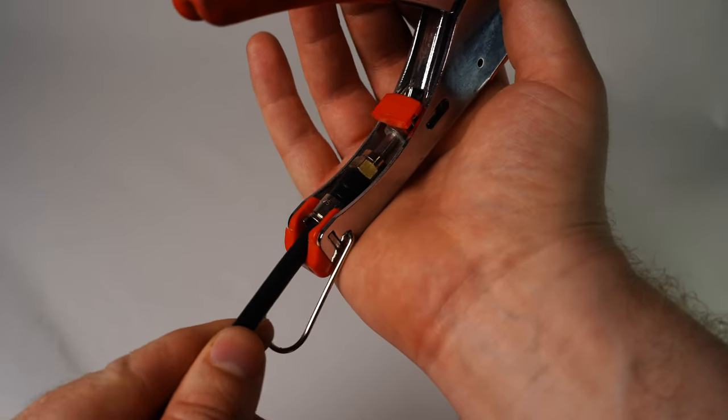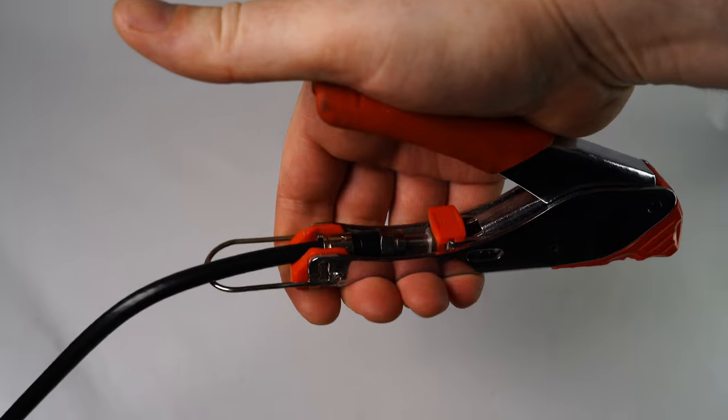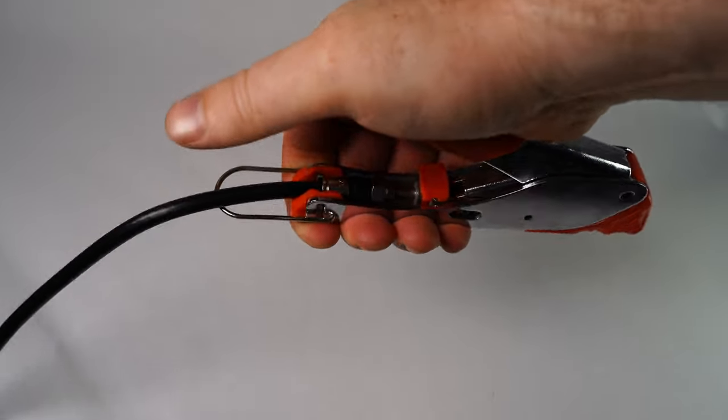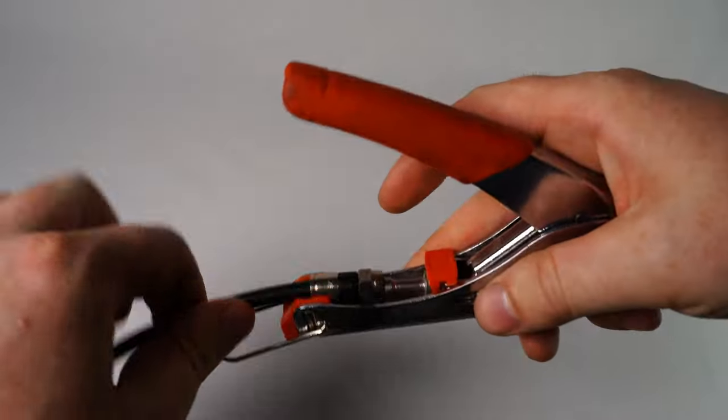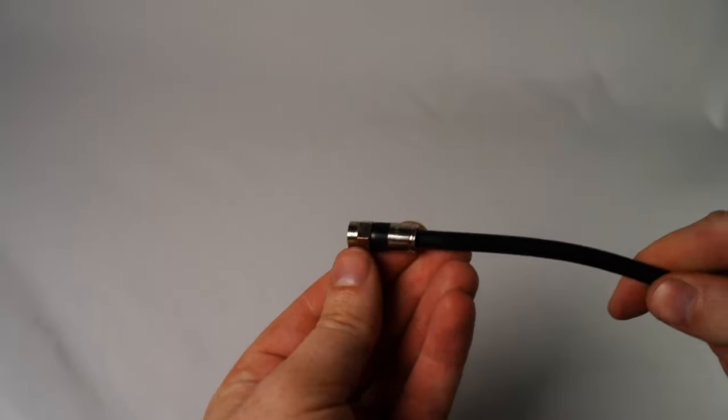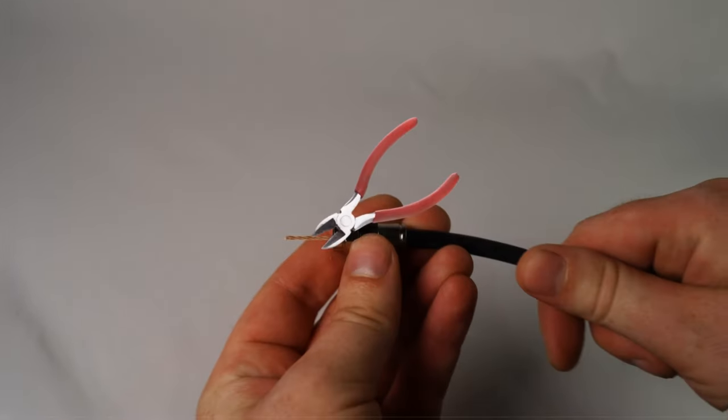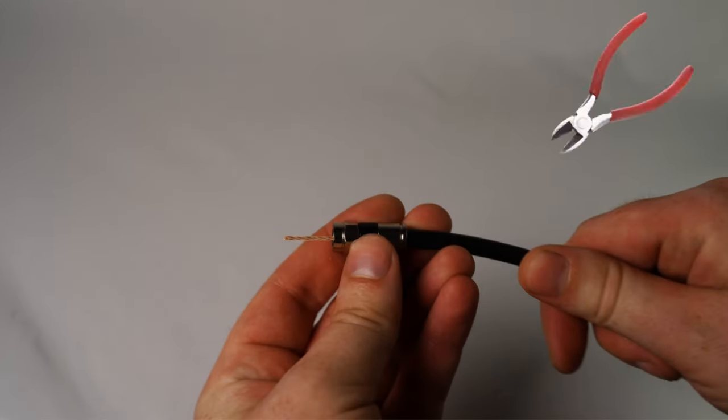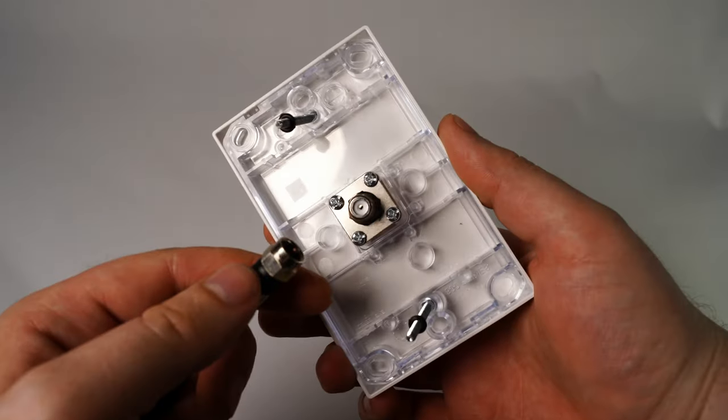The connector can now be placed into the compression tool. Squeeze the handle on the tool all the way down and release. If using these specified tools the inner core will be the perfect length as shown. If not then trim the core back to ensure it does not extend too far outside of the connector end.